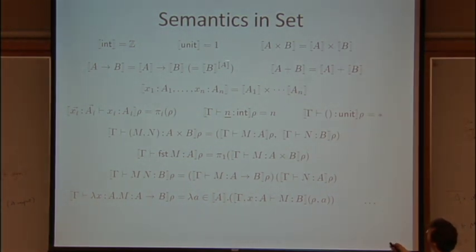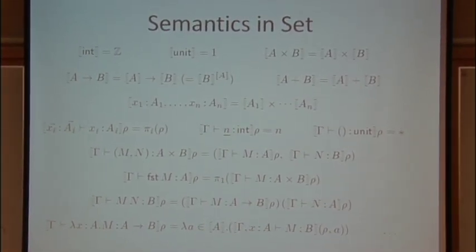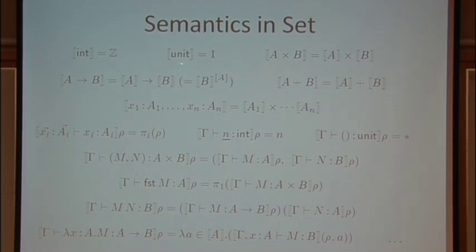So it's an inductive definition of the meaning of type, so it says we'll interpret the type integer in the programming language as the set Z of integers in mathematics, and we'll interpret the unit type as the one-point set, and we'll interpret the product type in the programming language as the Cartesian product in sets of the interpretations of the two types involved. I should probably have used a star in here or something to distinguish syntax over here from semantics over here. The meaning of a function type is the space of functions between the meanings. Disjoint union interprets the disjoint union type, and the meaning of an environment, a type environment,